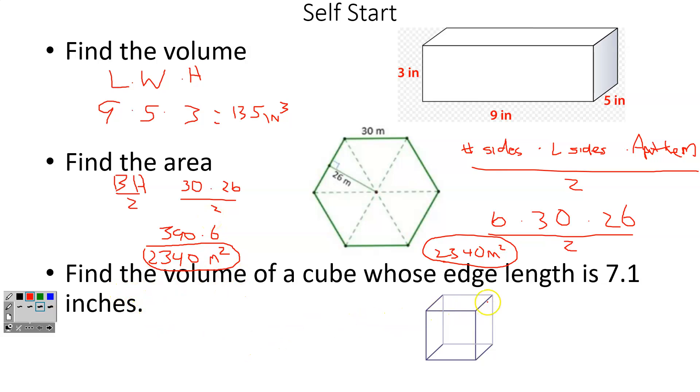The last one says find the volume of a cube whose edge length is 7.1. So I'm just going to put 7.1 inches down here. Now, because it's a cube, all of the sides are going to be the same. So that means the length is 7.1, the width is 7.1, and the height is 7.1. So to do this, I'm going to do length times width times height. So 7.1 times 7.1 times 7.1. That should give me an answer of 357.911 inches cubed for volume.